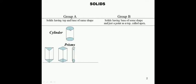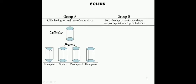There are different types of prisms: triangular prism, square prism, pentagonal prism, and hexagonal prism. For the triangular prism, this is the base and this is the top, which is triangular in shape — specifically an equilateral triangle. And there will be three vertical rectangular faces.